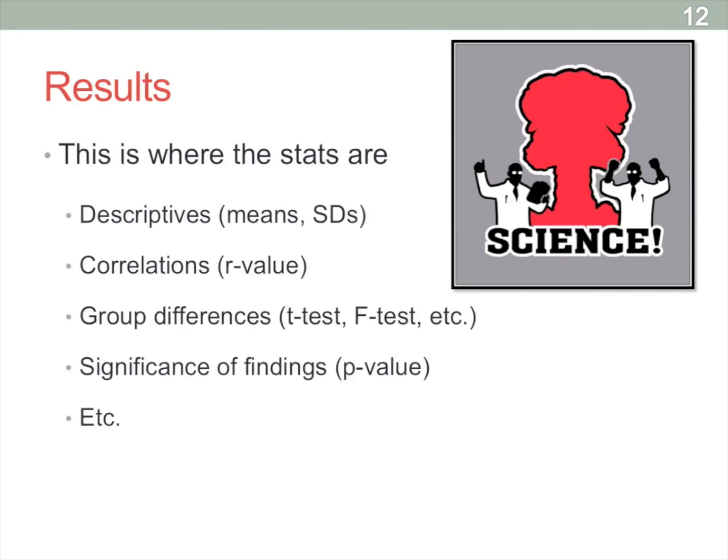So they're laying out the means and standard deviations of each group, especially in this study, they're going to get into correlational values like r coefficients. If there are experiments going on and group differences, differences between the control and experimental group, they're going to do the t-tests or f-tests if they're running multiple independent variables.